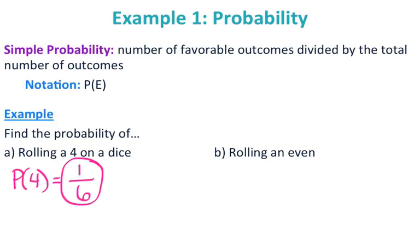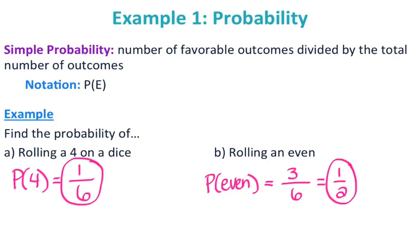The probability of rolling an even number — how many ways can you get an even number on the dice? Well, you have 2, 4, 6, so that's 3 out of 6 options. So your probability of rolling an even is 1/2.